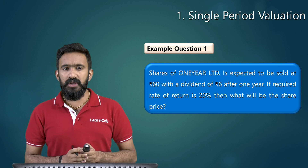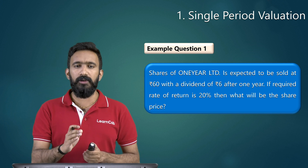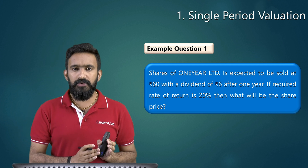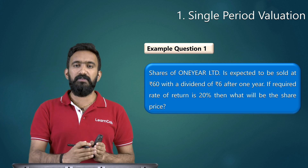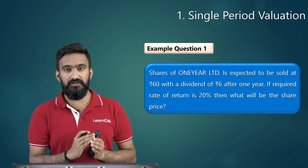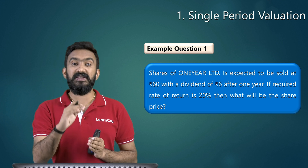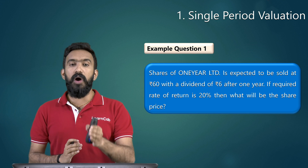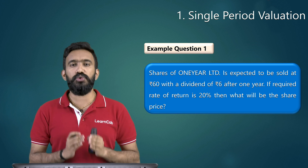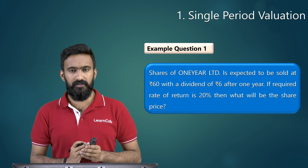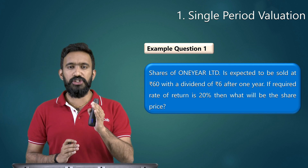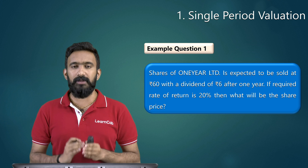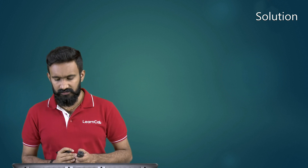Let's read the example question. Shares of One Year Limited are expected to be sold at rupees 60, with a dividend of rupees 6 after one year. The share of this company will be worth rupees 60 at the end of this year and will also give rupees 6 as dividend. If the required rate of return for the investor is 20%, then what will be the share price today? The question gives three pieces of information and asks you to find the value of that share.